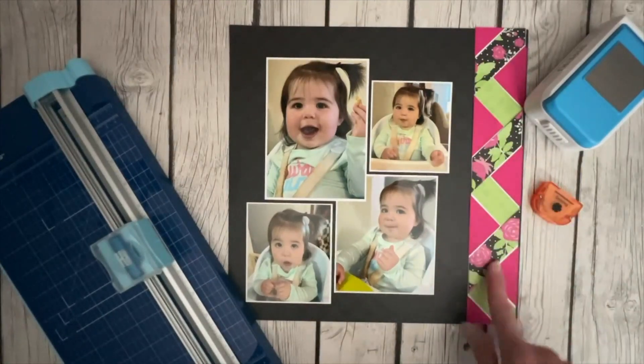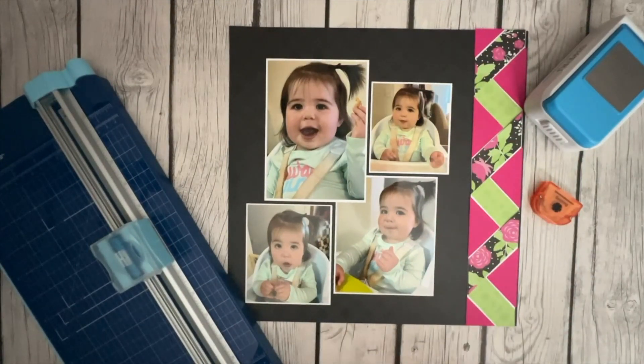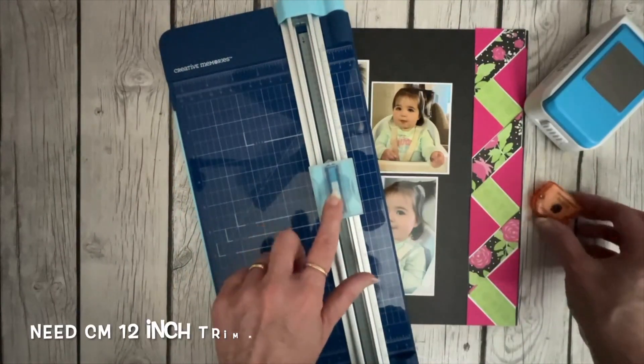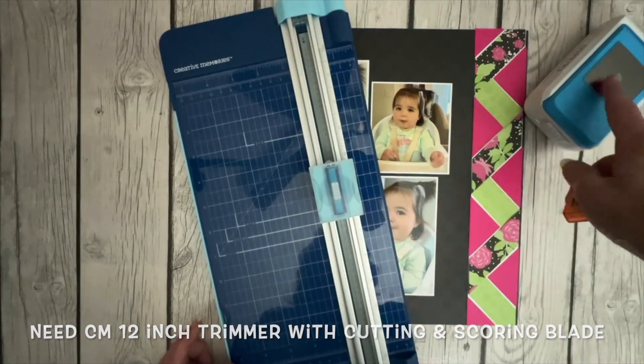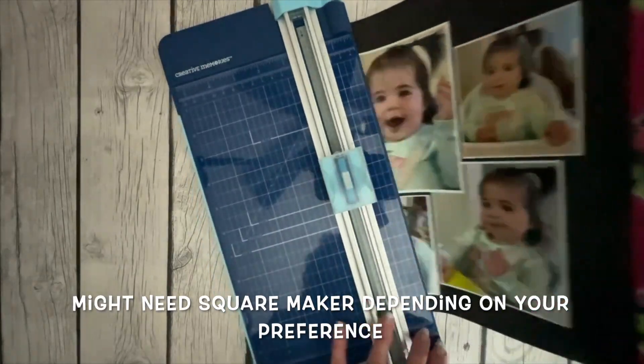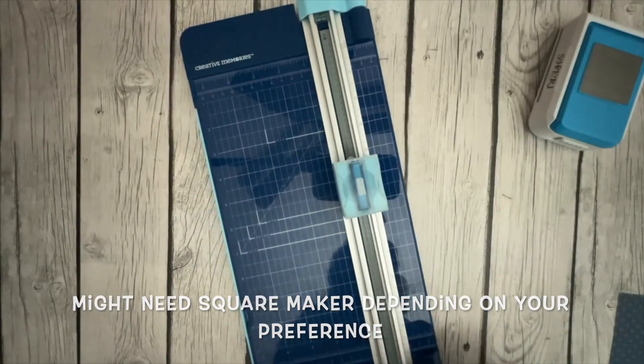Now this is what the idea looks like as a border on the side of this page and all you need is your 12 inch trimmer with the cutting blade and the scoring blade and then you might want to go back and use the square maker. I'll show you how to do that at the end but this is a quick easy idea.